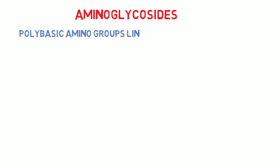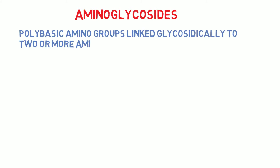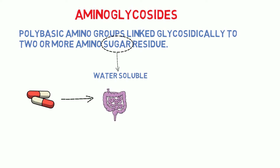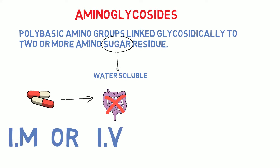Aminoglycosides are called so because they consist of polybasic amino groups linked glycosidically to two or more amino sugar residues. Since they consist of sugar, they are water-soluble. Being water-soluble makes them unlikely to be absorbed through the gastrointestinal tract, so we need to give them intramuscularly or intravenously.